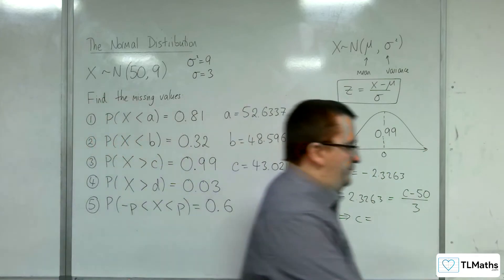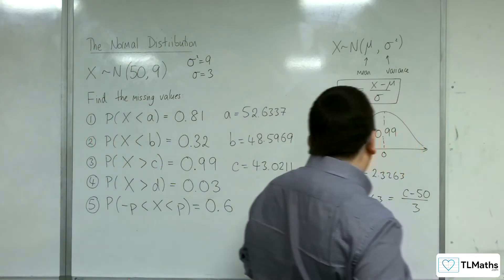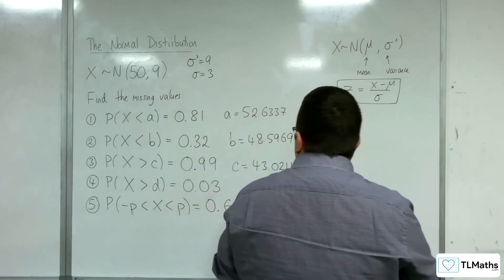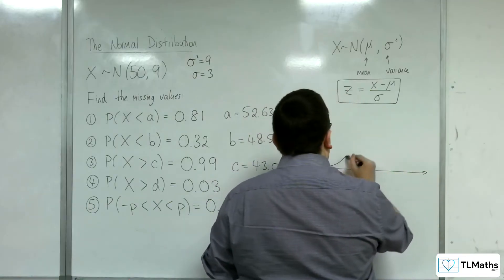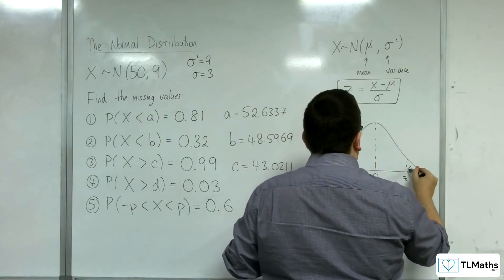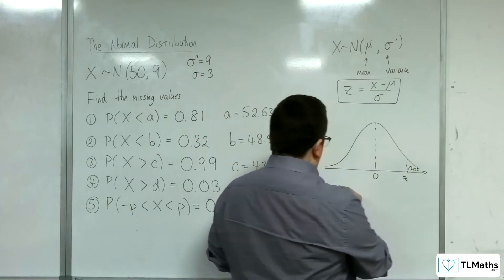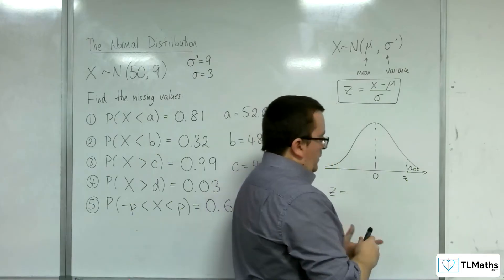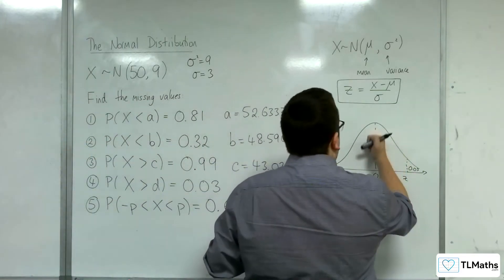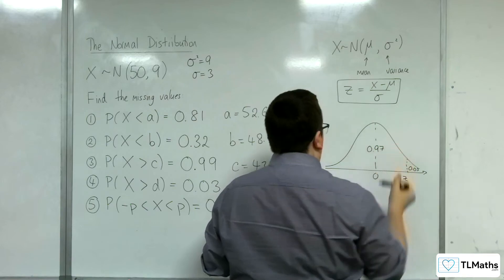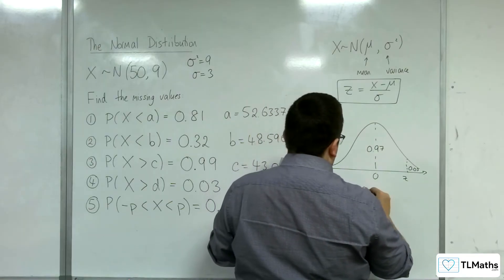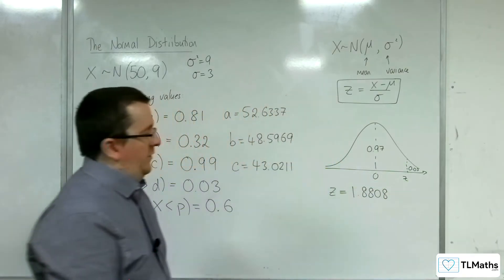Right. Number 4. So to the right is 0.03. So to the right is 0.03. So what I want to do is I want to look up 0.97. So 0.97 is 1.8808.